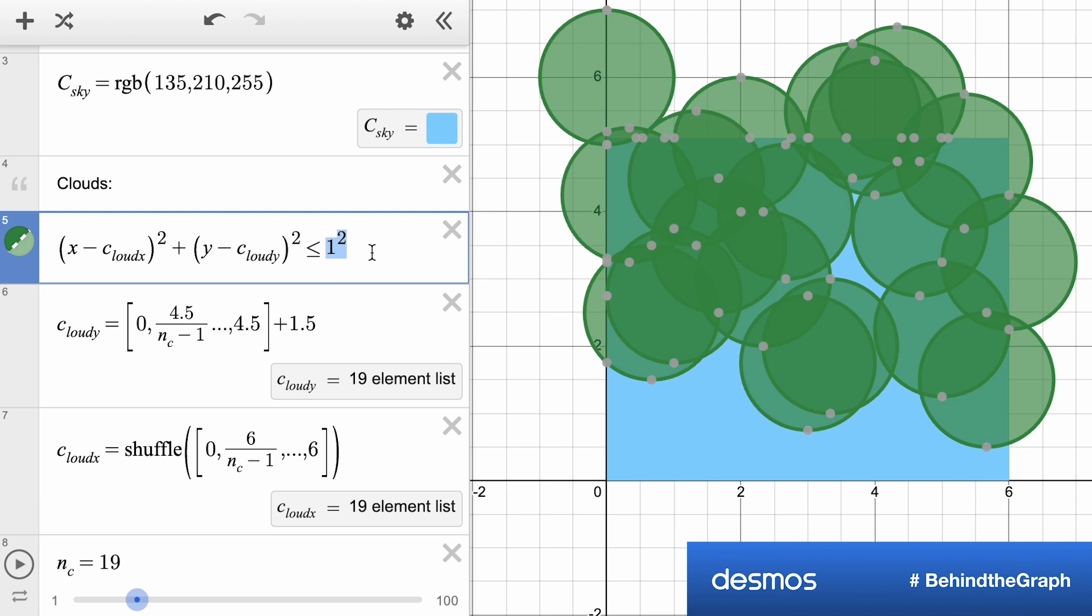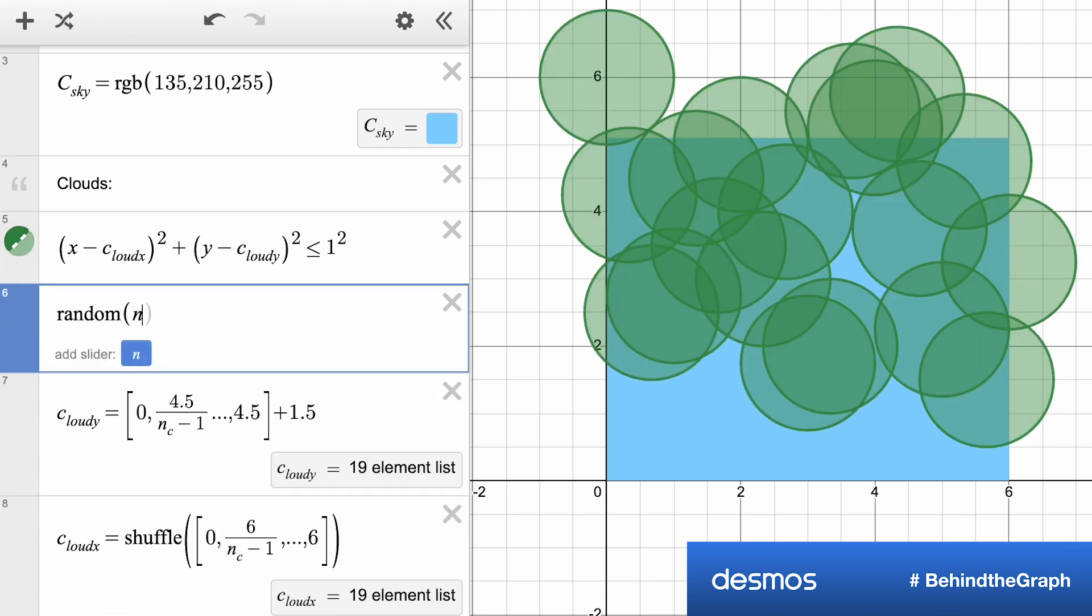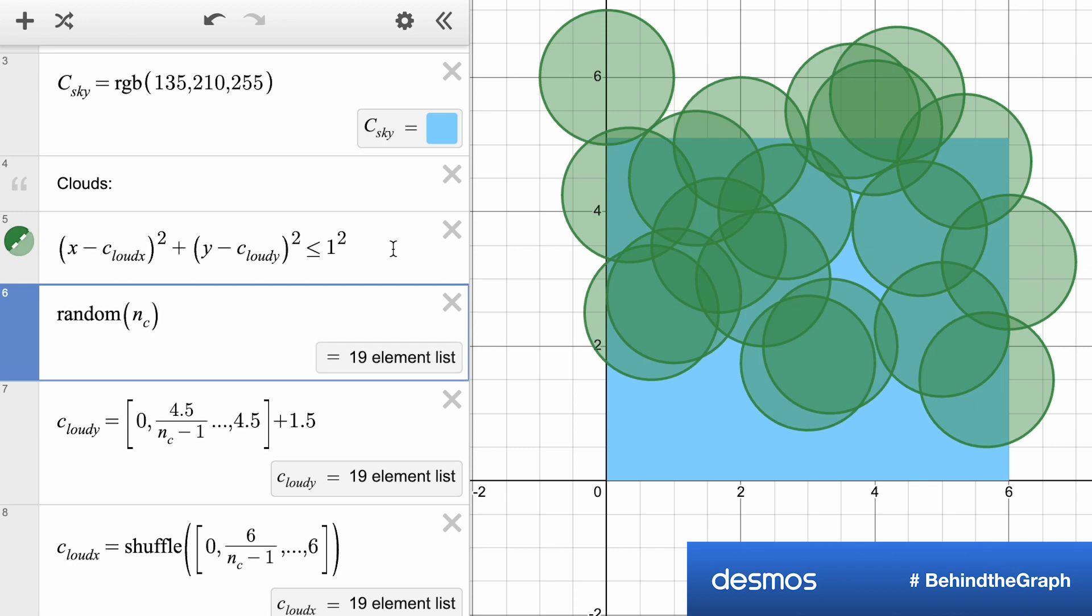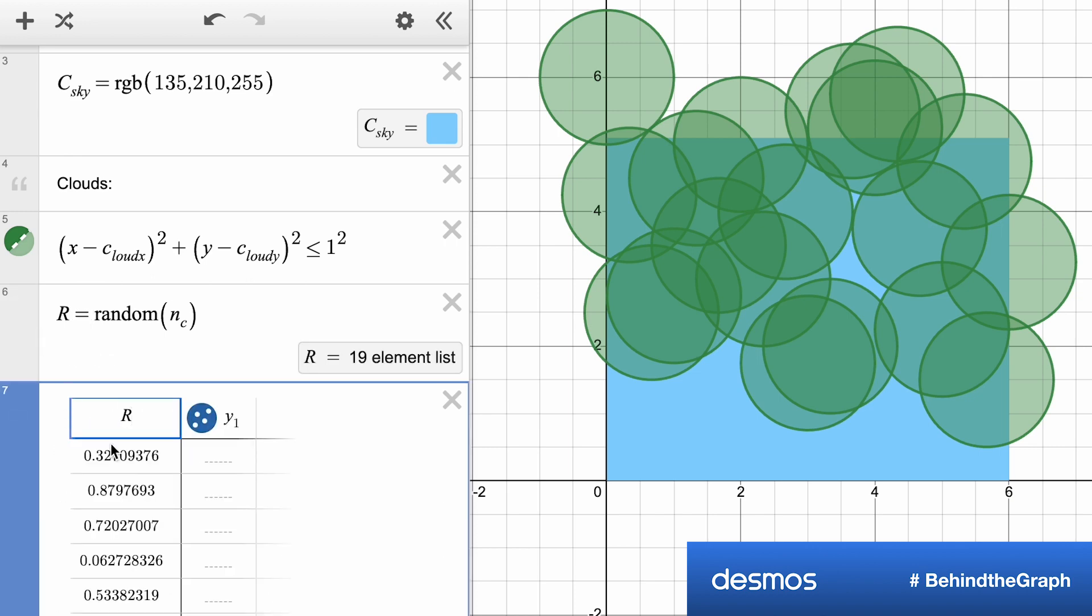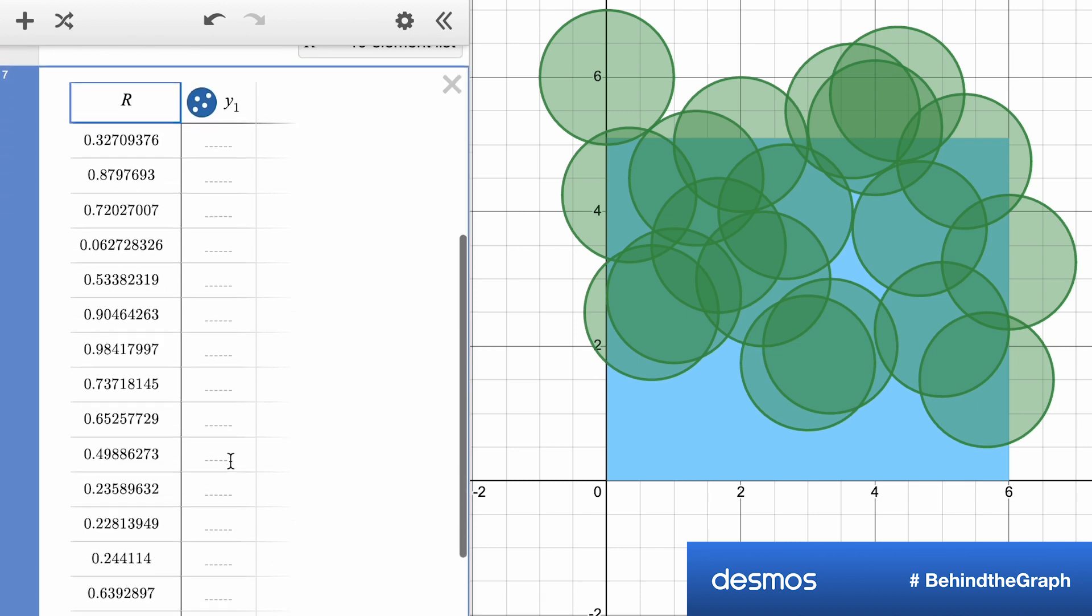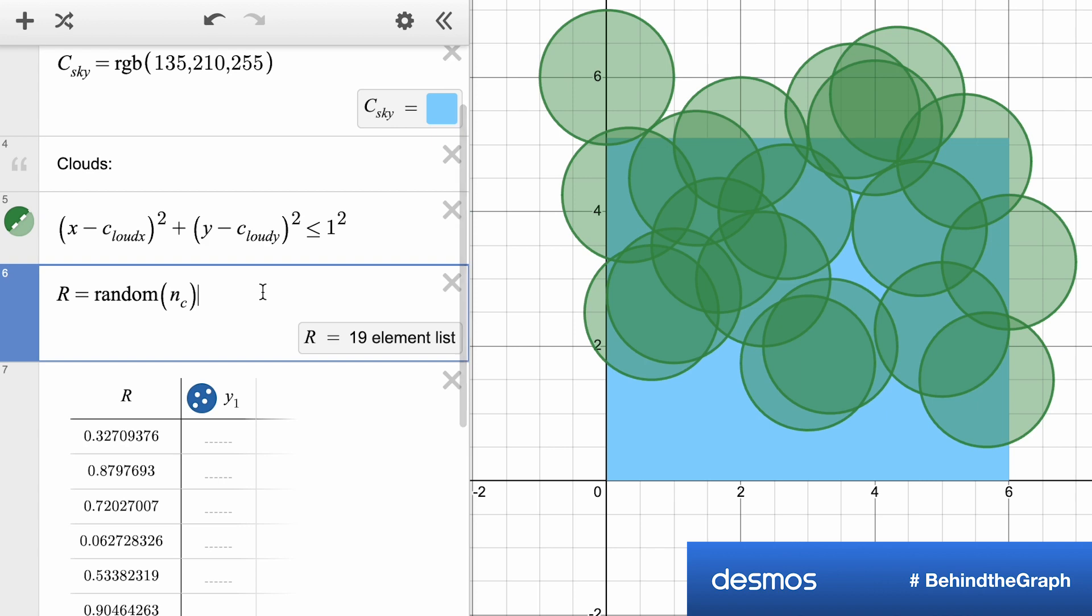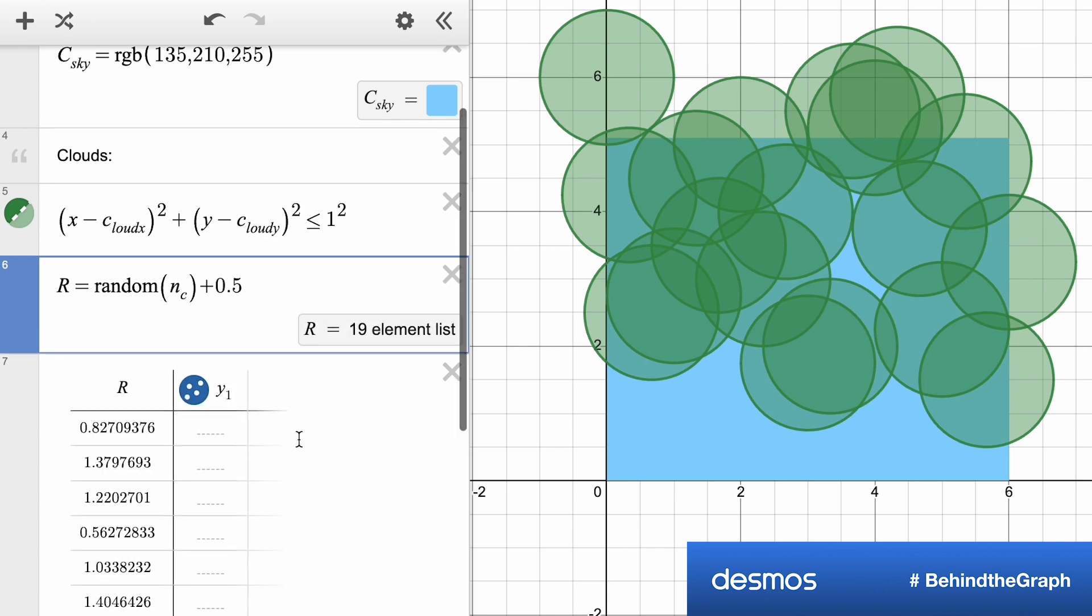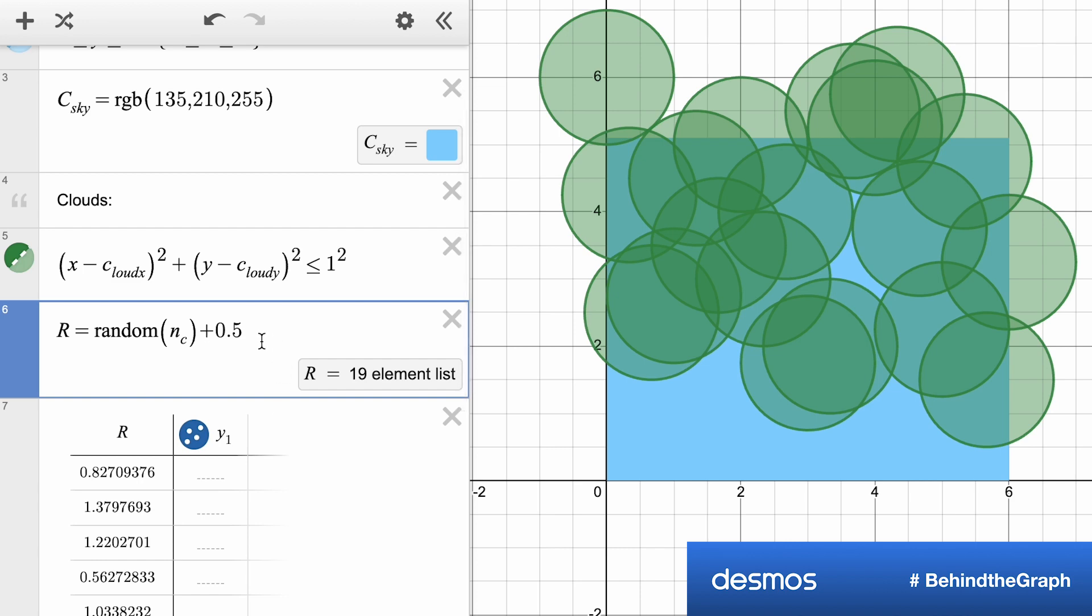Now let's look at the size of these circles. Now the one squared at the end of the equation controls the radius of each of these circles, but we want to even randomize that. So we're going to bring in this random function. So when I say random of n_c, it gives me n_c number of values. Now what are those values? Well, the default here, you see, they're all values between zero and one. The random function gives you that many values between zero and one. So what if I tack on a plus point five at the end, now it gives me values between 0.5 and 1.5.